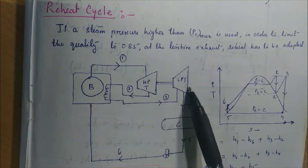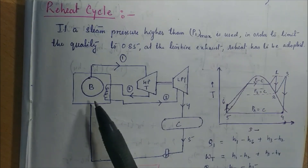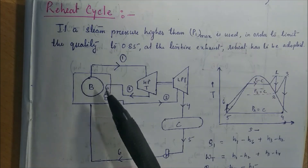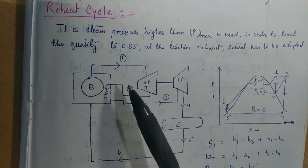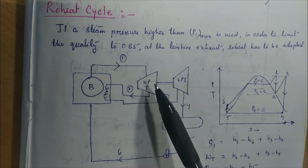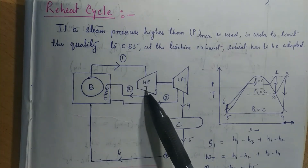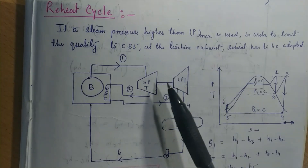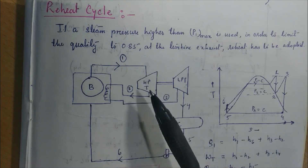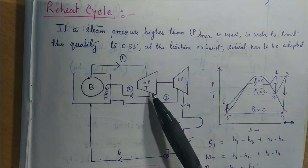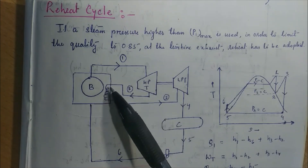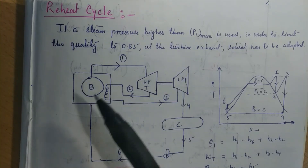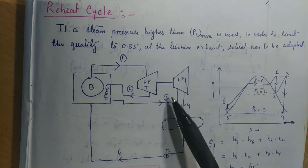The system consists of a boiler, high pressure turbine, low pressure turbine, condenser, and pump. In the boiler, we supply heat energy Q1 to generate steam from water. The steam is superheated and fed to the high pressure turbine. After performing work in the high pressure turbine, the steam is exhausted and fed to the reheater coil, which is connected to the boiler chamber, where the steam is again heated.